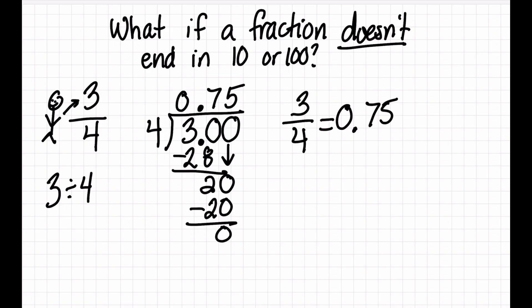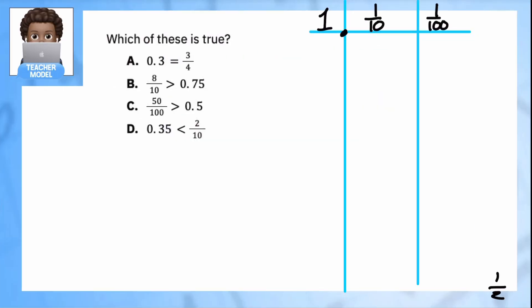Now back to the practice. Here's a state test question asking which of these statements is true. I have a bunch of different numbers and I want to make them all the same form. I love my table for this. I'll turn all fractions to decimals. Starting with option A: I already know 3/4 equals 0.75, and the other value is 3 tenths. Are those two equal? No — 3 tenths is not equal to 75 hundredths. So option A is false.